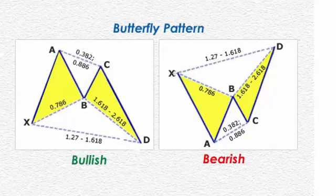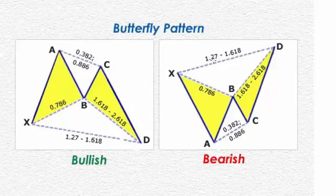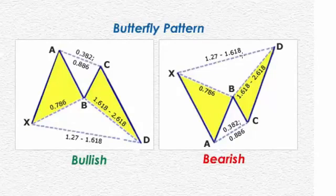Bryce Gilmore designed the butterfly pattern, and 1.272 became the factor to use, although some people do use a 1.618. Let's take a look at an example on a drawing, and then let's look at a live example.